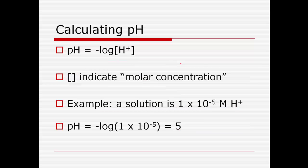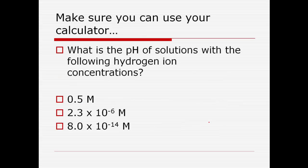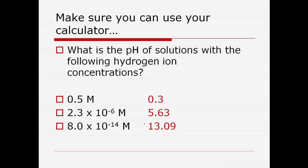Our pH here is 5, so this would be an acid because the pH is lower than 7. Give yourself a chance to practice doing some negative log calculations — feel free to pause this and calculate the pH of these different solutions. All of these are the molarity of hydrogen ion, so to get the pH of any of them you're going to negative log it. When you hit play we'll check the answers.